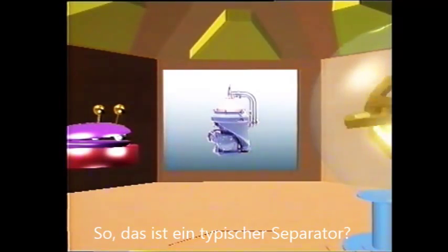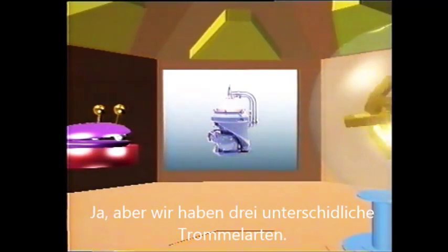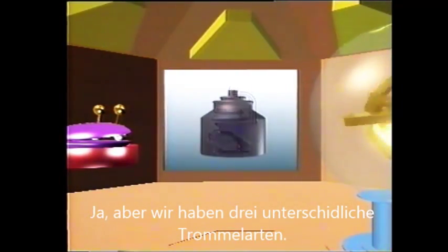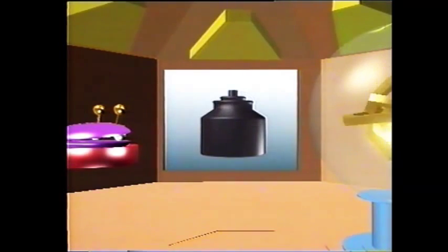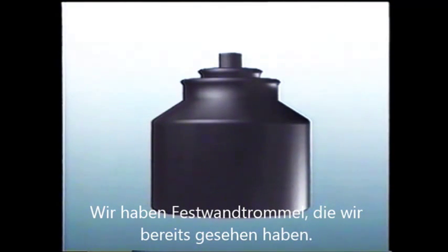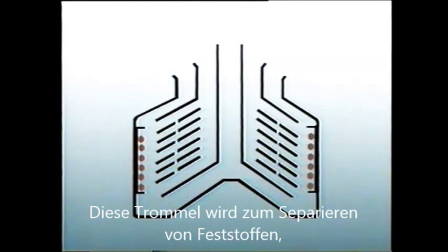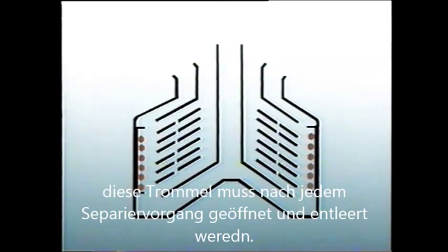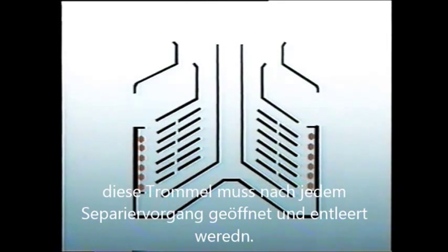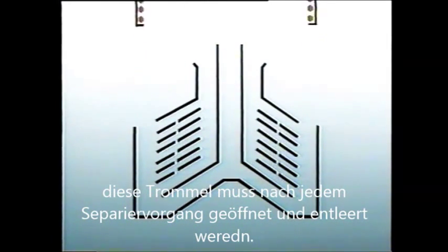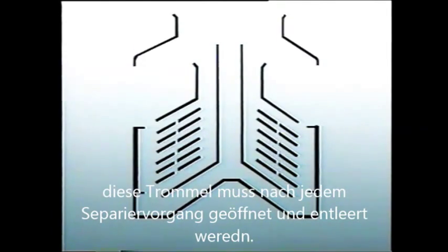The bowl is the most important part of the separator. If we then fit a drive unit and a cover, the result is a centrifugal separator. There are three main types of bowl available. First, we have the solid bowl centrifugal separator — it has a solid wall with no outlets. This type is a solids retaining separator, used for what is known as intermittent service. At the end of each run, the bowl hood is removed and any compacted solids are lifted out manually.